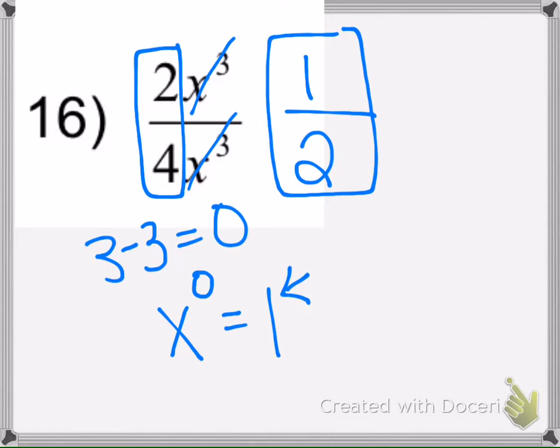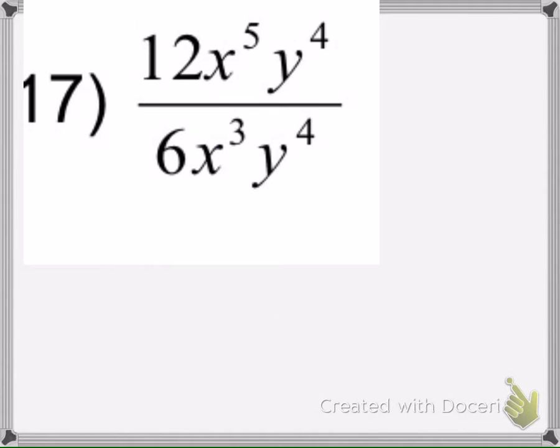And the reason why we don't have to write 1 is because if I do, if I put 1 here, 1 times 1 is just 1. So that's why it's just 1 half.